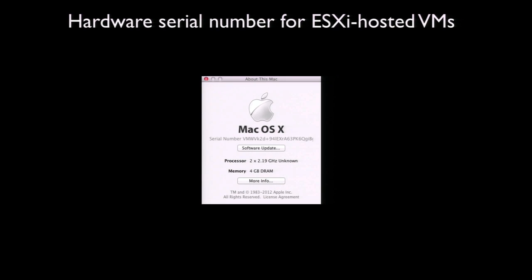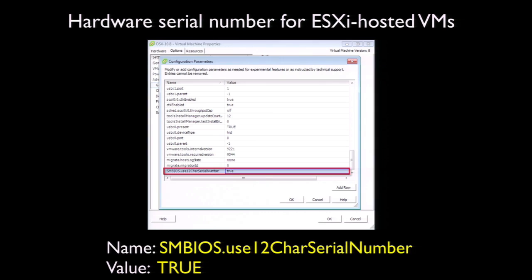One issue you may run across in ESXi VMs, just as in Fusion, is that the hardware serial number may be set to be longer than the 12 characters that Apple expects. You can fix this using roughly the same method as in VMware Fusion: shut down the VM, open the Configuration Editor, add the line shown on screen, save your changes, and restart the VM.